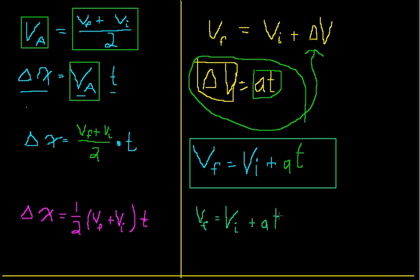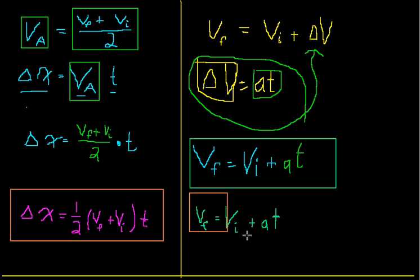That's VF equals VI plus AT. Beautiful handwriting, right? I thought so. So that is the second equation. So here, how about I highlight both of these, square them off in some color. What is this? Sepia? Mango? I don't know. So here we have the first two equations, the first two kinematic equations done.